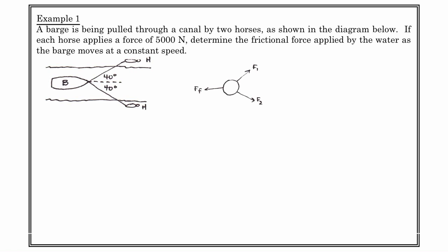We need to draw our free-body diagram. We'll represent the barge by a circle. Horse 1 produces F1, horse 2 produces F2, and friction is in a direction to oppose the motion — friction always opposes slipping, and because this boat is not simply slipping through the water, friction acts opposite to the motion of the boat. Constant speed implies acceleration equals zero, so the sum of F1, F2, and friction equals zero.